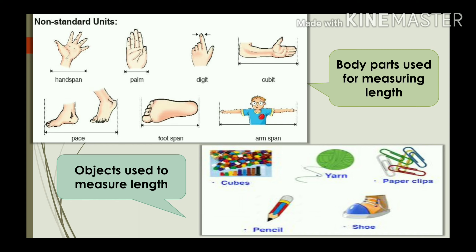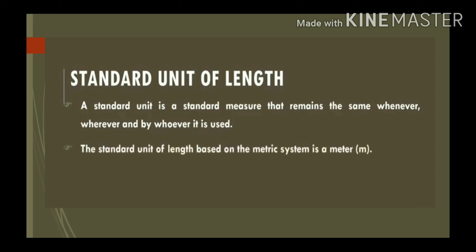Here are some examples of non-standard units. Body parts used for measuring length include: handspan, palm, digit, cubit, pace, foot span, and arm span. Objects used to measure length include: cubes, yarn, paperclips, pencil, shoes, etc.